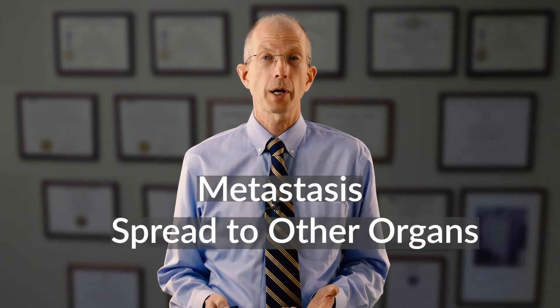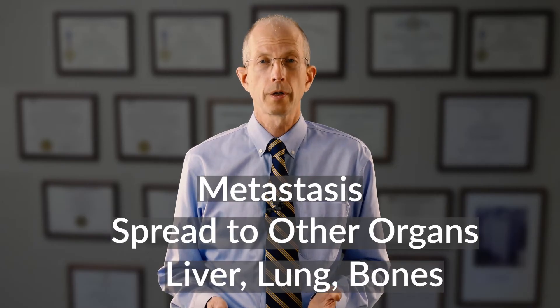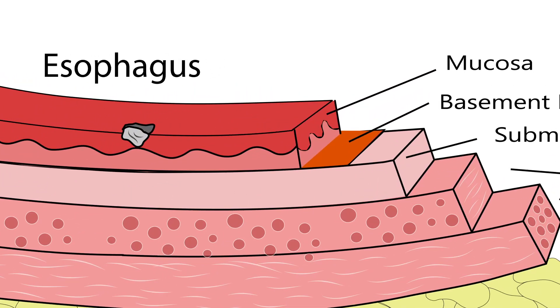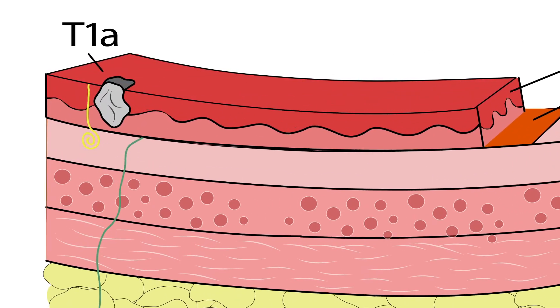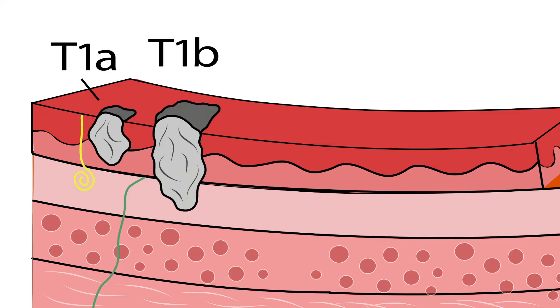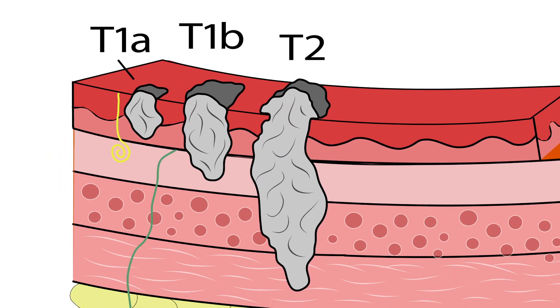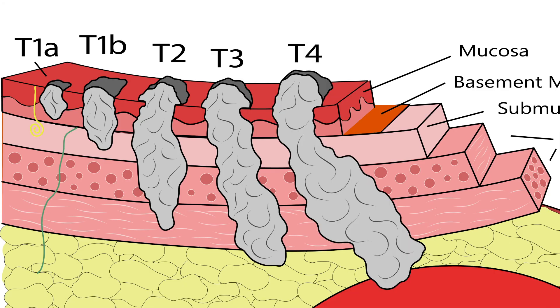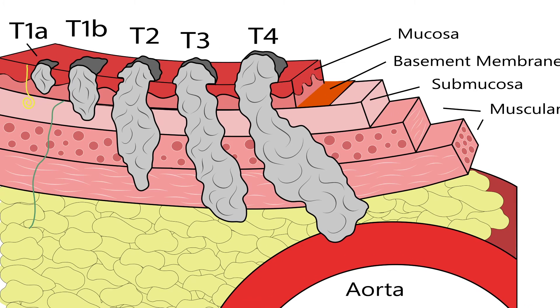Metastasis is the term for spread to other parts of the body, such as the liver, lungs, or bone. The stage consists of three parts: T for tumor, N for nodes, and M for metastasis. A T1 tumor involves the top layer of the esophagus — this is the earliest stage. A T1A tumor involves the mucosa. A T1B tumor involves the submucosa. A T2 tumor invades into the muscular layer. A T3 tumor invades all the way through the muscular layer. A T4 tumor invades into nearby structures such as the aorta or the airway. As a general rule, if someone with esophageal cancer has difficulty swallowing, the tumor is usually a T3 tumor.